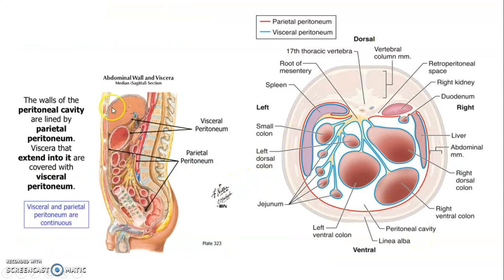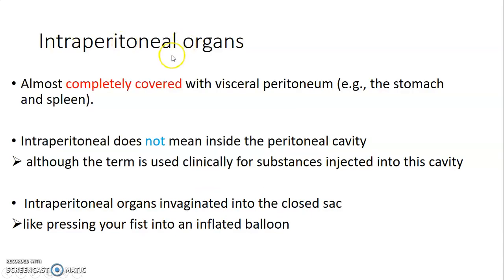Whatever lines the abdominal pelvic cavity is the parietal peritoneum, and whatever lines the organs is the visceral peritoneum. Intraperitoneal organs are those completely covered by visceral peritoneum — it does not mean they are inside the peritoneal cavity. The peritoneal cavity is the space between visceral and parietal peritoneum. Intraperitoneal organs invaginate into the visceral peritoneum and form a closed sac, like pressing your fist onto an inflated balloon.